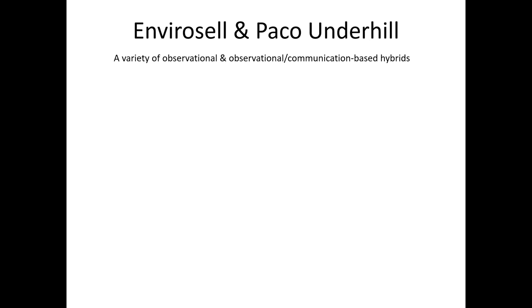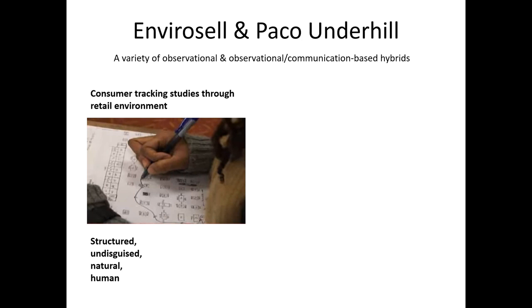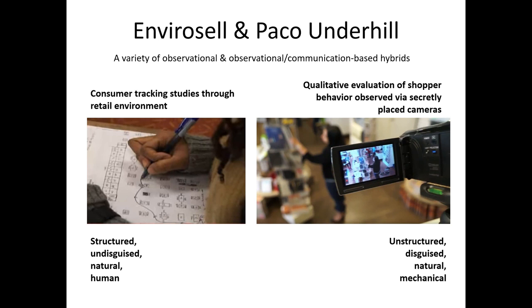Next, let's introduce a few examples of observational research used in marketing research and explain the four different dimensions each design breaks down across. EnviroCell is one of the most famous marketing research companies that engages in a lengthy amount of observational research. Paco Underhill is the founder of EnviroCell. They use a variety of observational and observational communication-based hybrids. For example, they often do consumer tracking studies through a retail environment. The image here shows an EnviroCell employee tracking where a particular consumer walked through a retail store — literally their path of purchasing. This study was structured because the observation is to track where people have gone. It's undisguised, natural, and a human is responsible for observing and measuring.